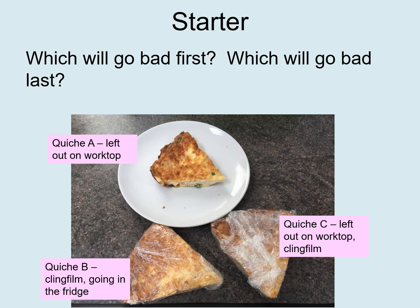Here's your starter task. If you're watching with someone you can discuss it; if you're on your own, think about it or write a couple of bullet points. Which piece of quiche is going to go bad first, and which will go bad last? Slice A has been left out on the worktop uncovered; quiche B is in cling film going in the fridge; and quiche C is left out on the worktop but wrapped in cling film.